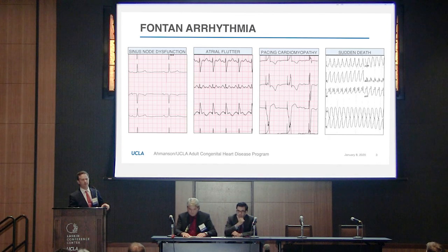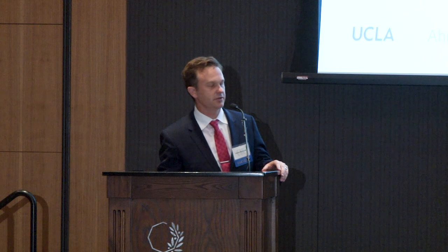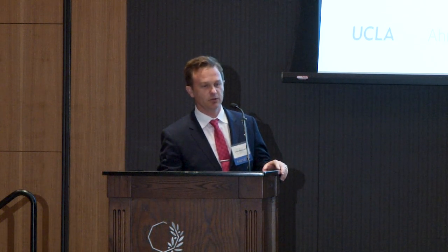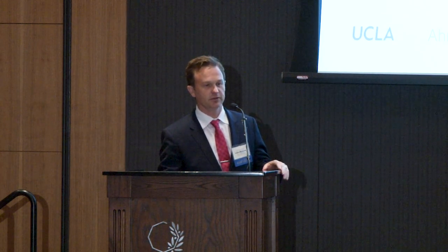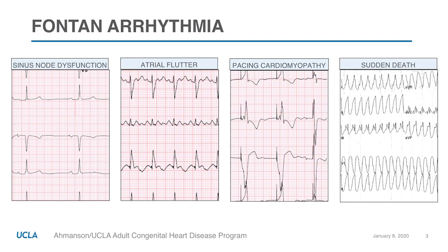Patients with Fontan circulation are exposed to essentially the same kinds of rhythm disturbances as other patients with congenital heart disease. The big difference being that they just don't tolerate these rhythm disturbances nearly to the same degree. These are the four categories I'm going to be talking about today: sinus node dysfunction, atrial flutter, pacing-induced cardiomyopathy, and sudden death.